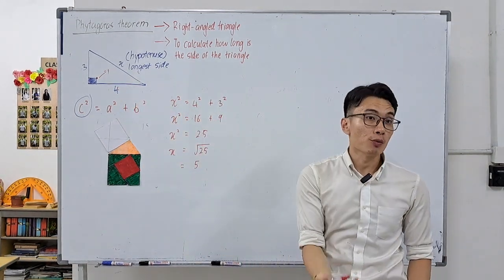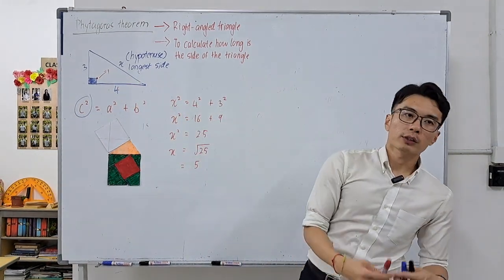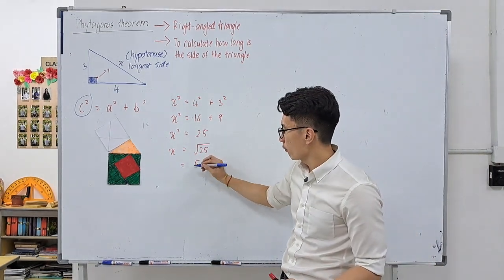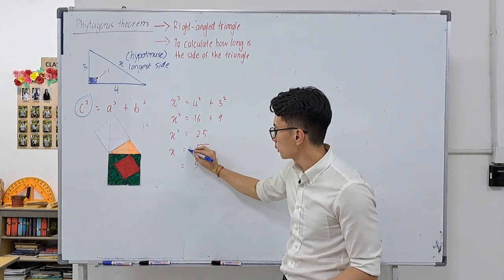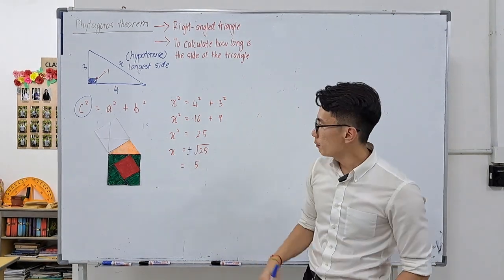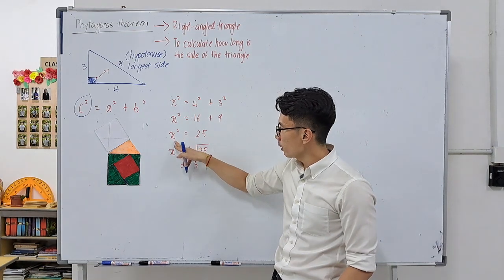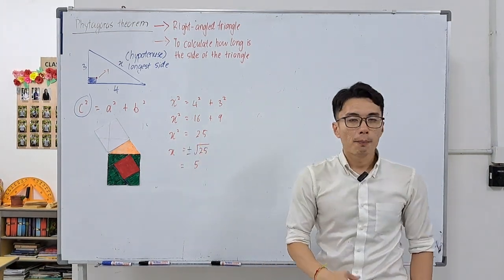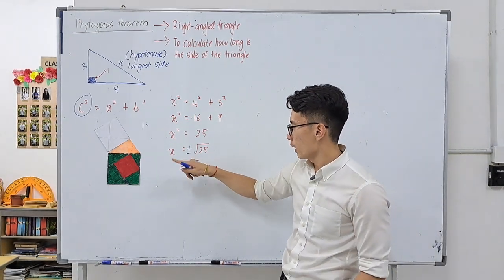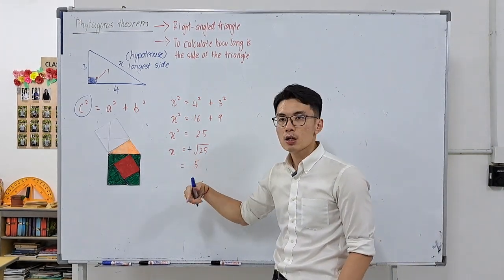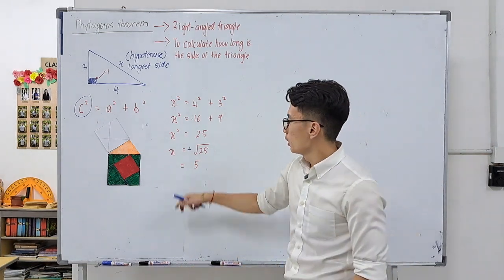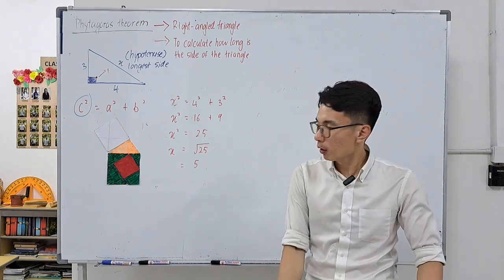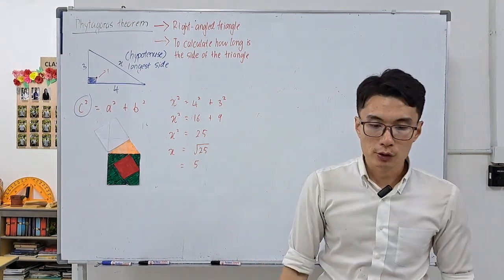The length of the hypotenuse is 5 units. Some of you may have a habit of writing plus or minus when square rooting, because both positive 5 and negative 5 squared give 25. But since we are dealing with shapes, we ignore the negative because there is no such thing as negative length. So all our answers by default will be positive. That's how we work on Pythagoras theorem.